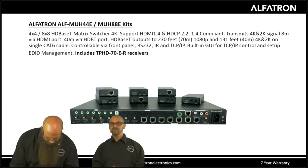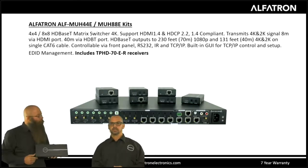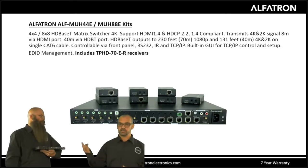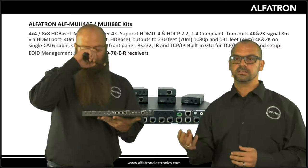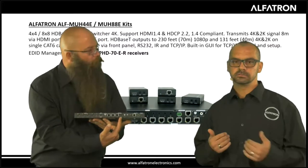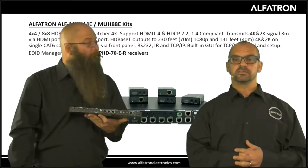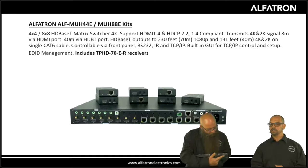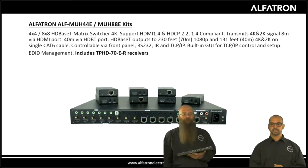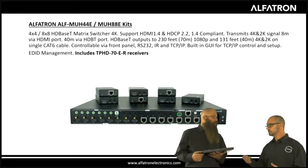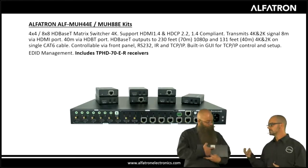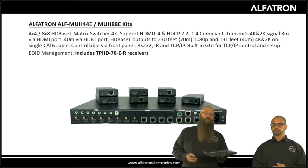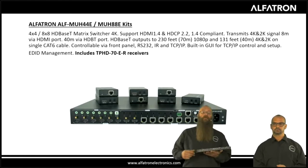The ALF MUH 44E 4K HDBaseT home distribution hub kit consists of a 4K HDBaseT matrix switcher, three HDBaseT receivers, and accessories — so this one does include three receivers. It consists of four HDMI inputs and three HDBaseT outputs with one HDMI output for local monitoring. The unit is controllable via bi-directional IR, RS-232, or a web-based GUI — you enter the IP address found at the bottom of the unit, access the GUI, and control the device however you want, including changing the IP address to fit your system.